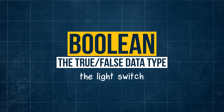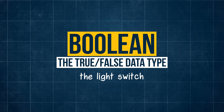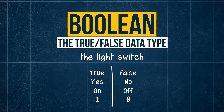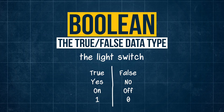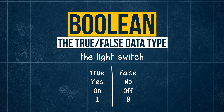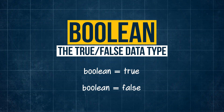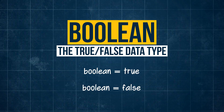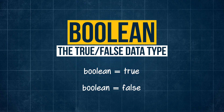Next we come to Booleans. They can either be true or false — like a light switch being switched on or off, or even your computer being turned on or off, it will always be one of these states. They're defined by either writing true or false after the equal sign, but without quotation marks.